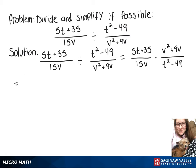Putting that all into one fraction gives us 5t plus 35 times v squared plus 9v over 15v times t squared minus 49.